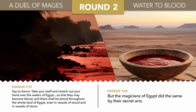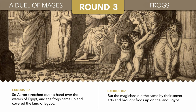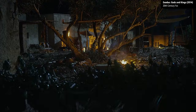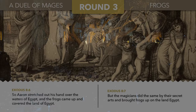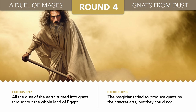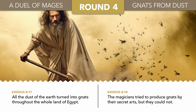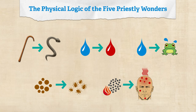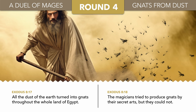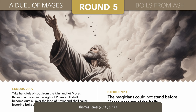Next, the frogs. Aaron again holds out his staff over the rivers, pools and ponds of Egypt, and makes frogs come forth from the water, almost like some kind of spontaneous generation. Pharaoh's magicians again perform the same feat with their secret arts, so the score remains three points per side. For his fourth wonder, Aaron stamps the ground with his staff, and the dust of the ground turns to gnats. All these feats follow a certain physical logic: the water produces frogs because frogs are wet and live in water; the dust turns into gnats because gnats resemble specks of dust and live in the dirt. This time, the magicians are unable to replicate the feat, and they describe Aaron's staff with awe as the finger of God.